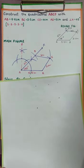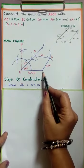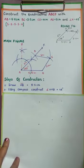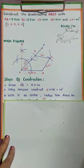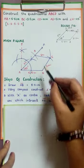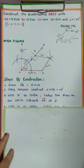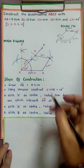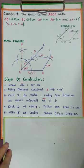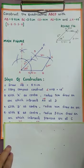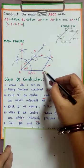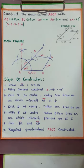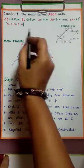Now let us recap the steps of construction. First, draw AB = 5.5 cm. Second, using a compass, construct angle XAB = 45 degrees. Third, with A as center and radius 5 cm, draw an arc intersecting ray AX at D. Fourth, with D as center and radius 4 cm, draw an arc. Fifth, with B as center and radius 3.5 cm, draw an arc intersecting the previous arc at C. Finally, join BC and CD. The required quadrilateral ABCD is now constructed. This is how we construct a quadrilateral when four sides and one angle are given.